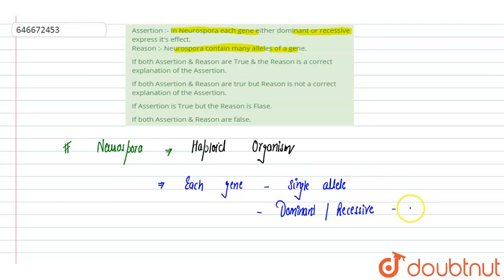So our assertion says: In Neurospora, each gene, either dominant or recessive, expresses its effect. Yes, this is correct because of its haploid nature. It is a haploid organism.